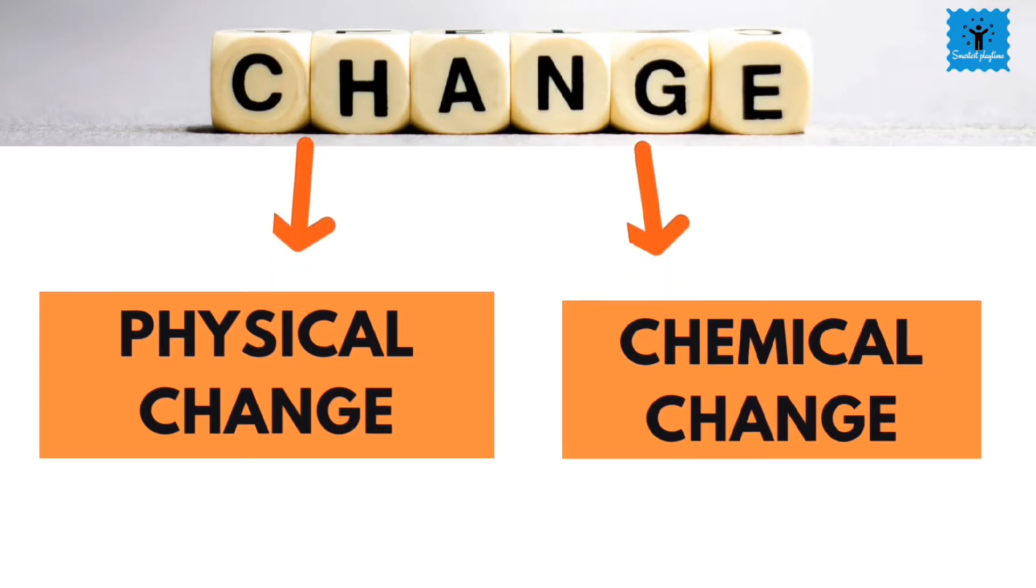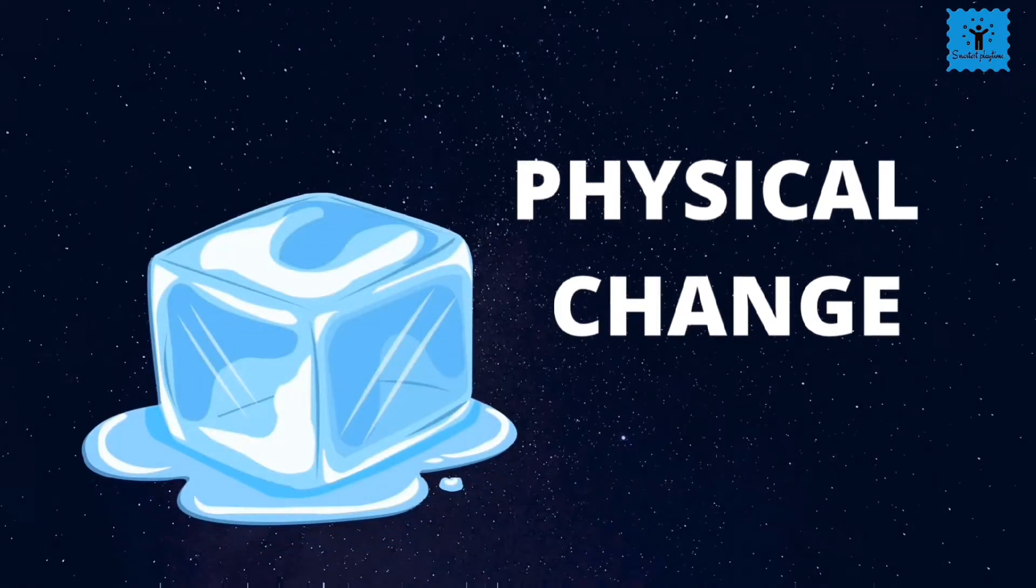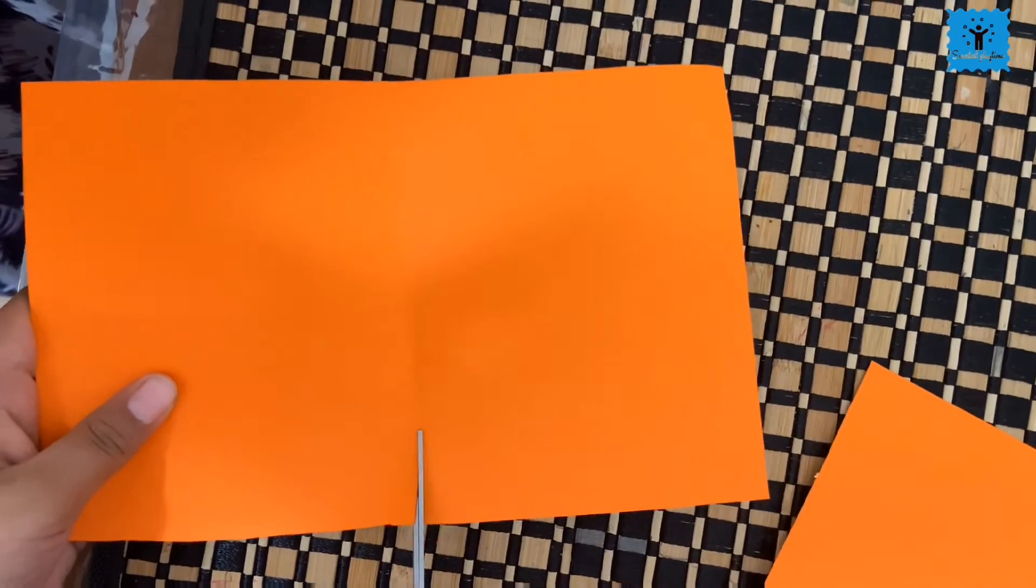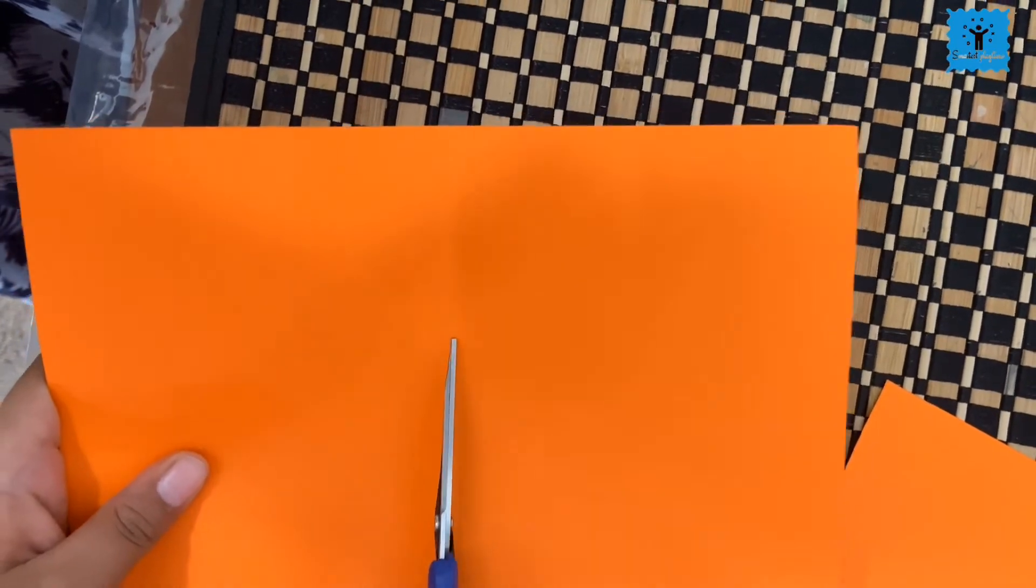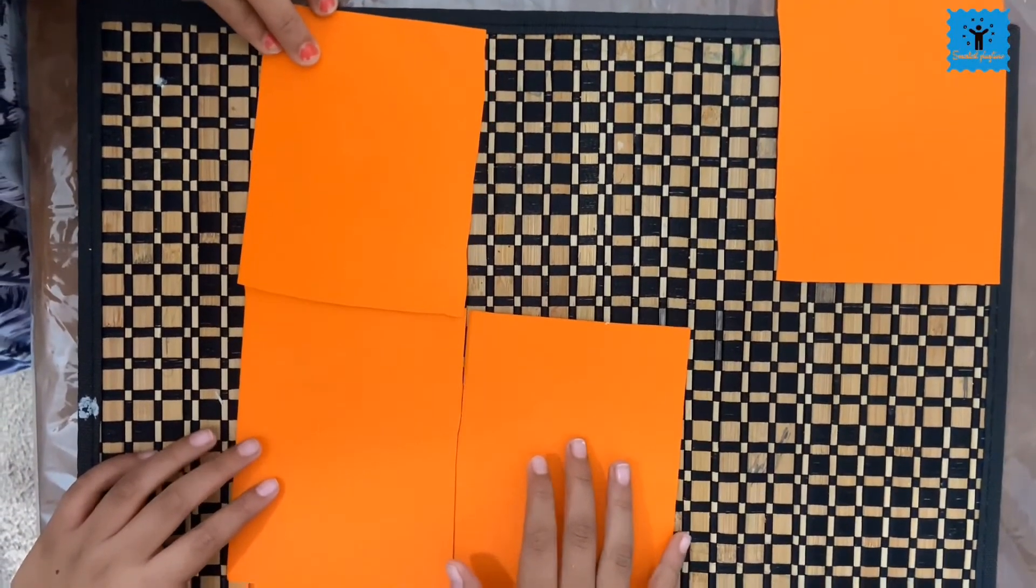Let's take an example to find out what a physical change is. Take a piece of paper and cut it into four square pieces. Now lay these pieces on the floor so that the pieces acquire the shape of the original piece of paper.